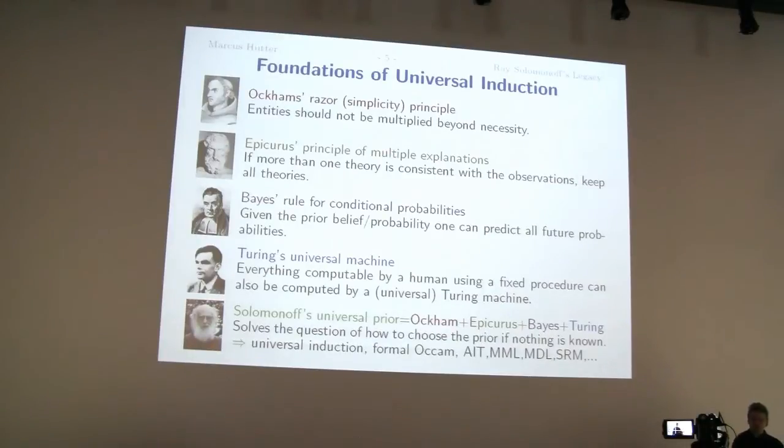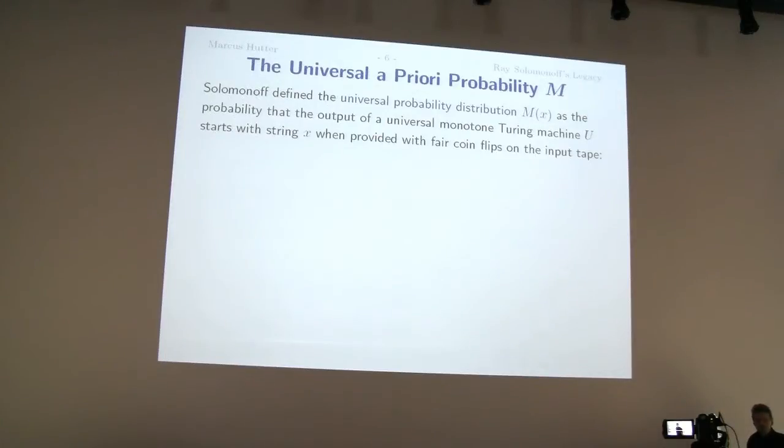And Ray Solomonoff in the 60s, or actually started already at the end of the 50s, combined all these principles and techniques into one formal system of inductive inference. So in my tutorial I gave a much slower introduction to that. But let's proceed. So here is this universal a priori probability. And there are at least three different definitions which turns out to be equivalent. I present two very closely related of them.